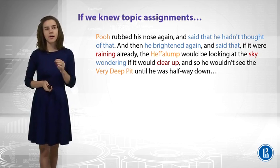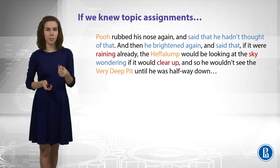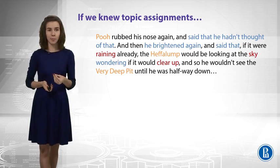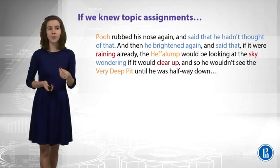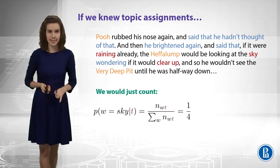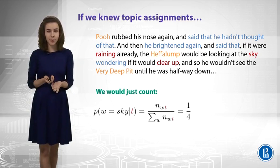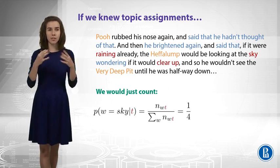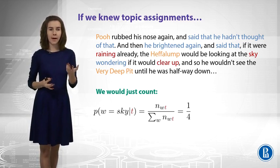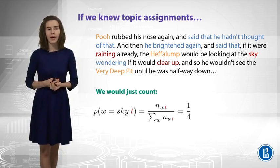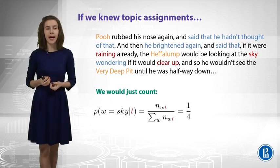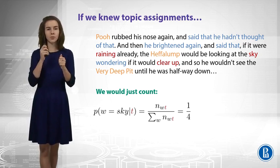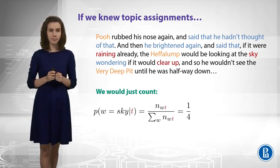How would you then calculate the probabilities of words in different topics? You know you have four words for this topic, and you want to calculate the probability of sky, let's say. This is how you do it. You just say, well, I like one word out of these four words. So the probability will be 1 divided by 4. By n_wt here, I denote the count of how many times this certain word was connected to this certain topic.